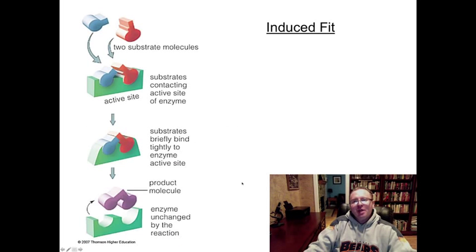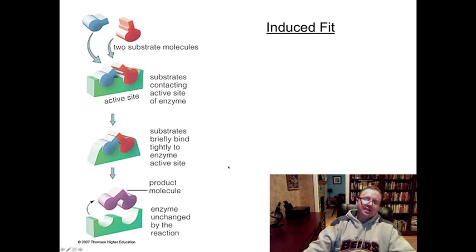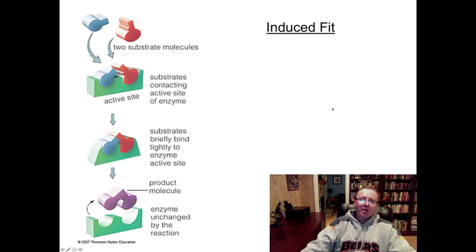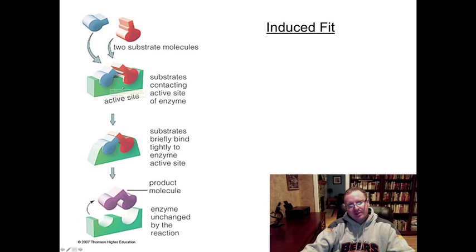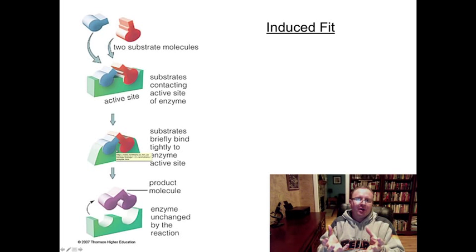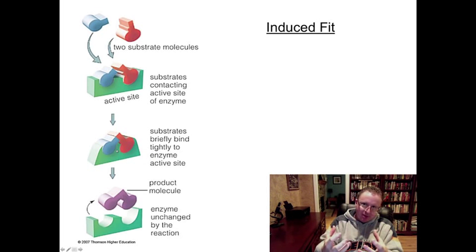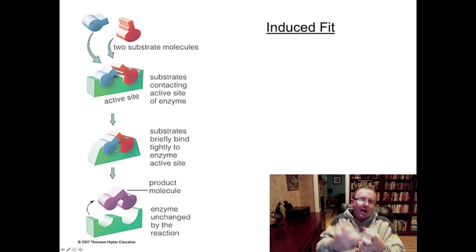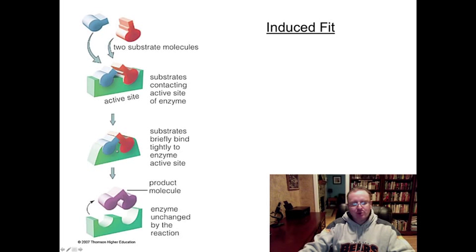If you recall, we talked about the lock and key model of enzyme action where the substrate fits perfectly into the active site. More recent research shows that we actually have something called an induced fit model of enzyme activity. The general idea is pretty much the same — substrates join at the active site — but when the complex forms, the enzyme actually fits a little more tightly around the substrate molecules. That induced fit, as the substrates come into the active site, induces the enzyme to wrap around those substrates, and it's that tight bond that appears to be breaking the bonds that hold the substrate together or facilitating the formation of those bonds.